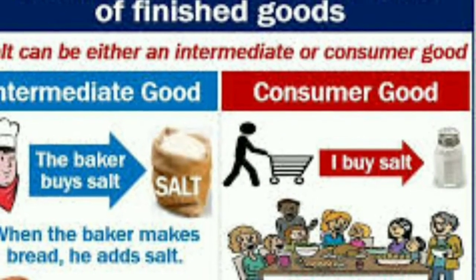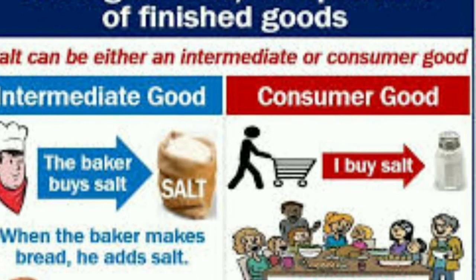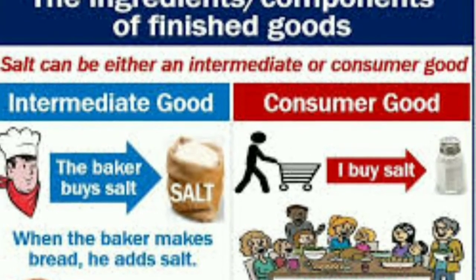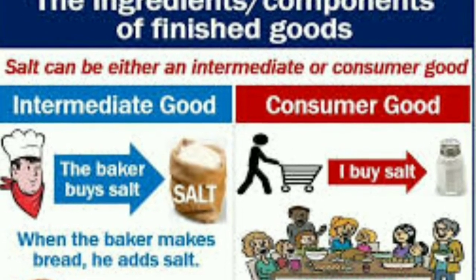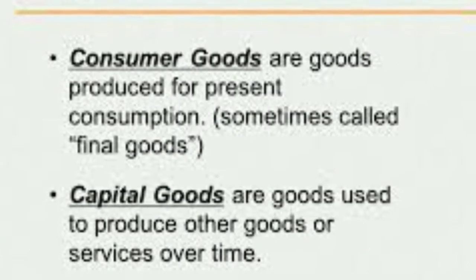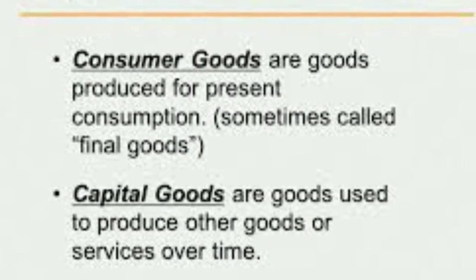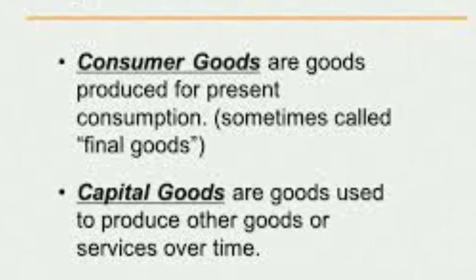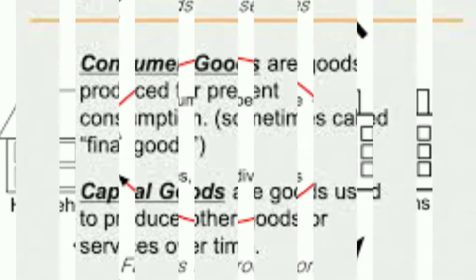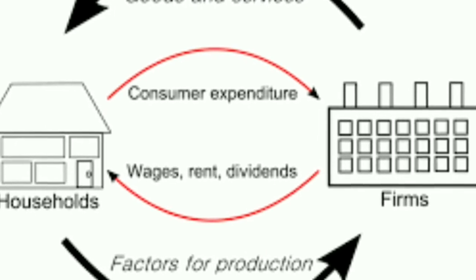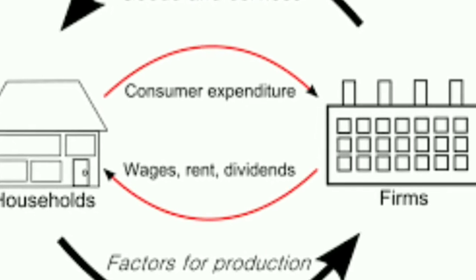Salt for a baker is an intermediate good, while salt for a family or consumer is a final product. Consumer goods are present for immediate consumption, but capital goods are those used over a period of time. This is shown in front of you in the presentation of the circular flow.